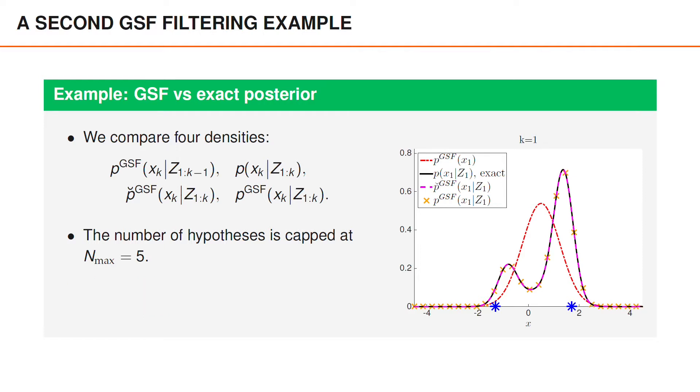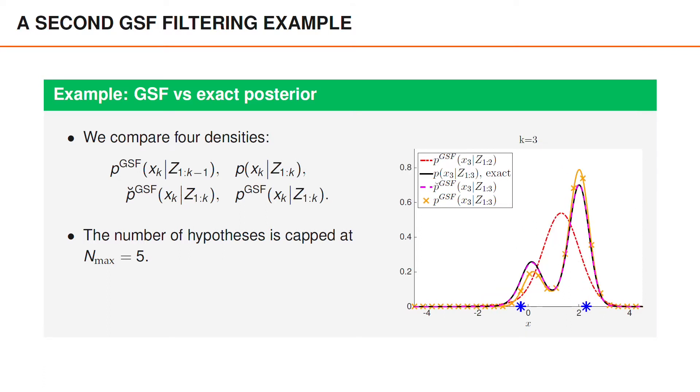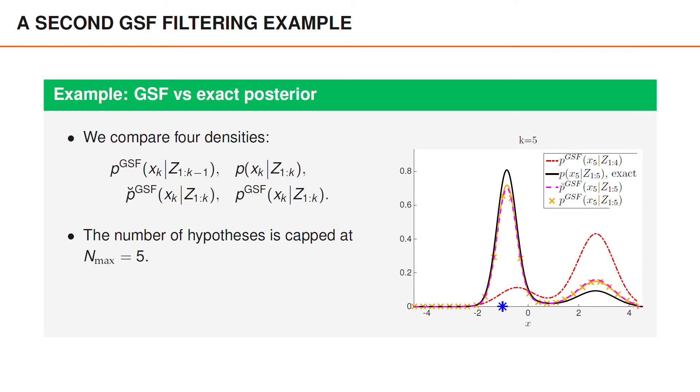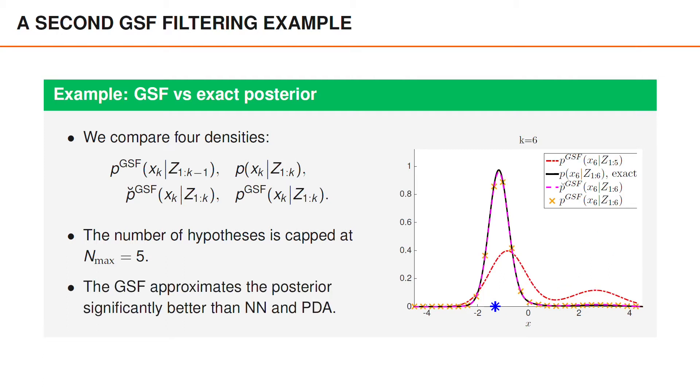If we compare the same filtering densities in the second scenario, we again note that the Gaussian sum filter looks almost perfect at time 1 and time 2. At times 3, 4 and 5, there is a noticeable difference between the Gaussian sum filter and the exact posterior, but this difference is diminished at time 6. Even if the Gaussian sum filter is not perfect, we have seen that it approximates the posterior density significantly better than what the nearest neighbor and PDA filters did in these examples.